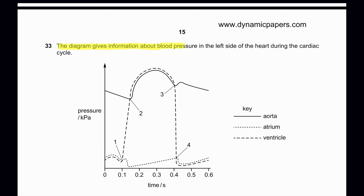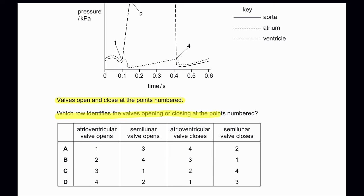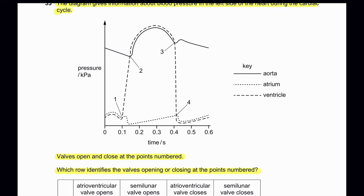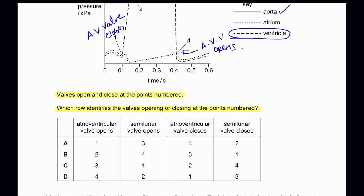Question 33: The diagram gives information about blood pressure in the left side of the heart during the cardiac cycle. Valves open and close at numbered points. At point 1, when ventricular pressure rises above atrial pressure, the atrioventricular valve closes. At point 2, when ventricular pressure rises above aortic pressure, the semilunar valve opens. At point 3, the semilunar valve closes. At point 4, when ventricular pressure falls below atrial pressure, the atrioventricular valve opens. So option D is the correct answer.